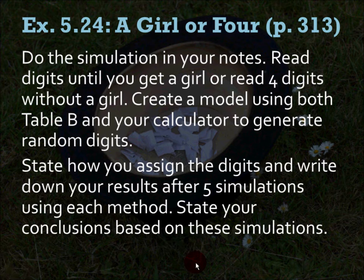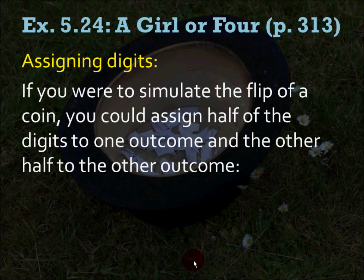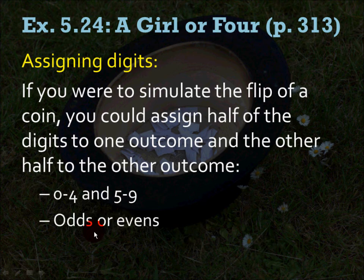Try to assign the digits yourself first. Since getting a girl and getting a boy is 50-50, you can assign half the digits to one outcome and the other half to the other. You could read single digits and have 0-4 represent a girl and 5-9 represent a boy, or you could say an odd digit is a girl and an even digit is a boy. Use the random number table if you have it, or find the one I posted on the School Loop page and Facebook.